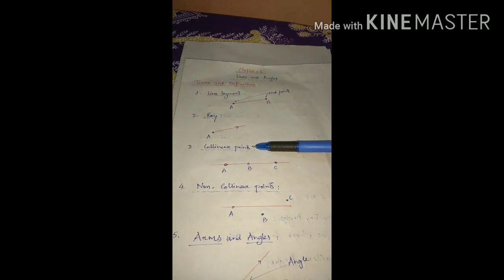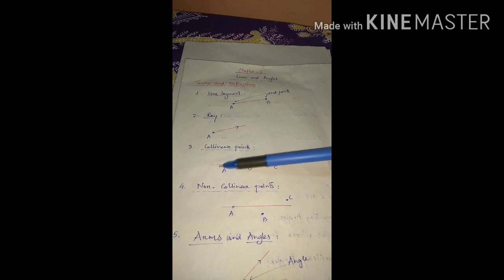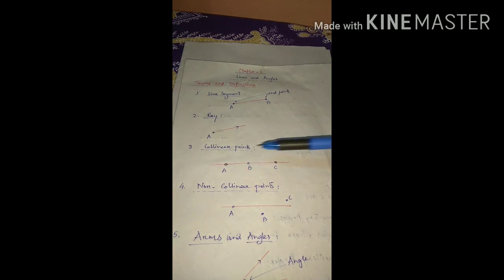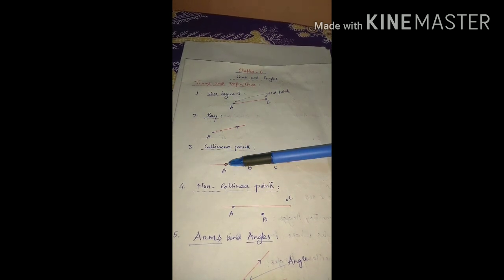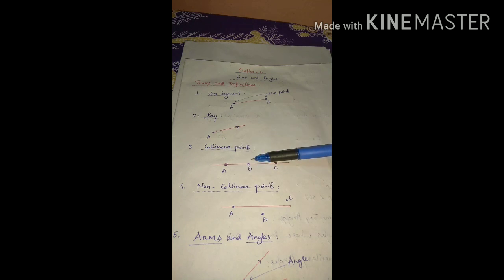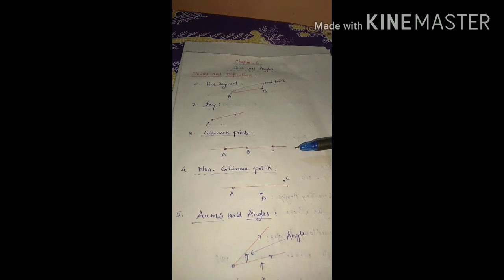The next one is collinear points. In this diagram you see a straight line, and on this straight line three points A, B, and C are there. All three points lie on this line. If three or more points lie on a line, then the points are known as collinear points.